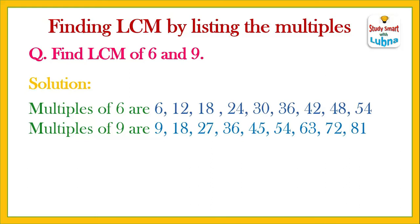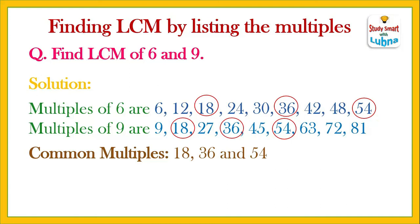Now we will find out the common multiples of 6 and 9. The first common multiple is 18, the second is 36, and the third is 54. So the common multiples of 6 and 9 are 18, 36, and 54. The least common multiple here is 18, which is the smallest. Therefore, the LCM of 6 and 9 is 18.